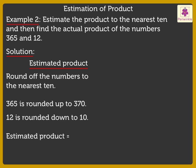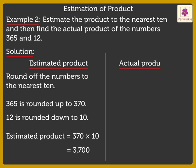Thus, the estimated product is equal to 370 into 10, which is equal to 3,700. Now, let us find the actual product.